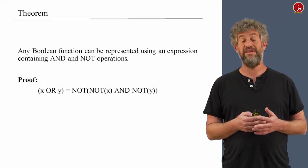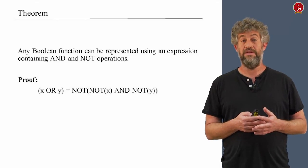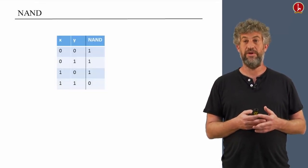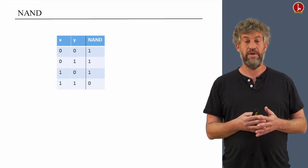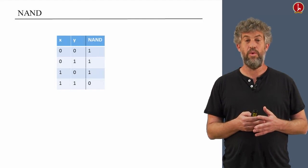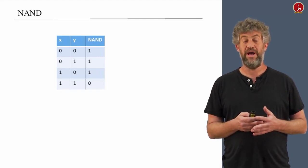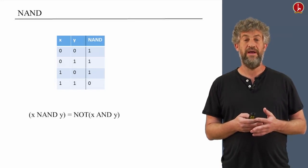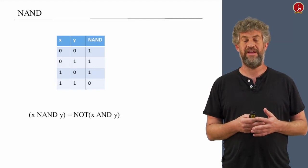But it turns out that there is yet another operation that by itself does suffice to actually compute everything, so let me introduce the NAND function. So the NAND function, here is a truth table. It gives zero only if both of its inputs are one, and every other possibility it gives one. Logically, x NAND y is defined to be the negation of x AND y.